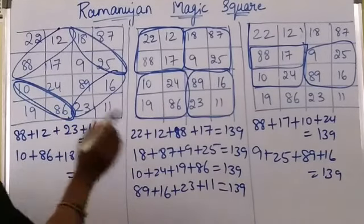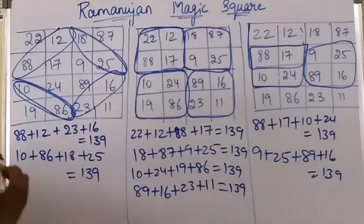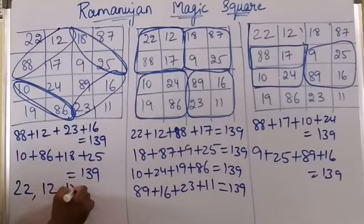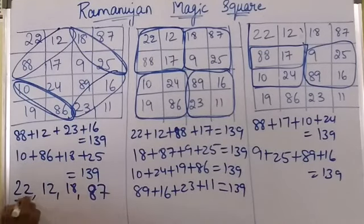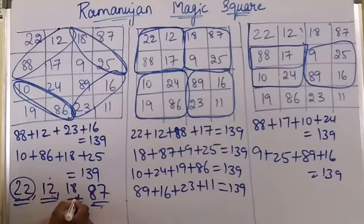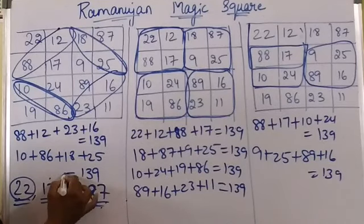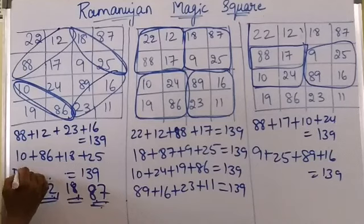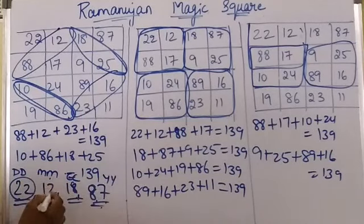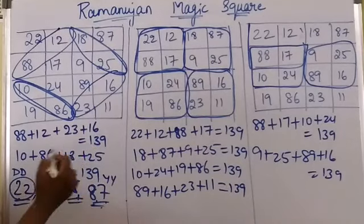Do you know what is the main attraction of this square? If you see the first row, you have 22, 12, 18, and 87. What is this? This is Ramanujan's date of birth. He was born on 22nd December — December is the 12th month — in the year 1887. So 22 is the date, 12 is the month, 18 is the century, and 87 is the year.